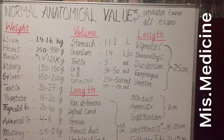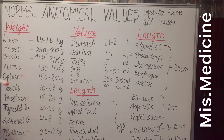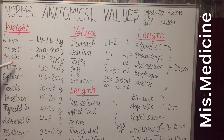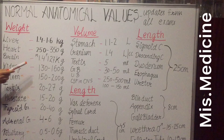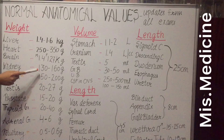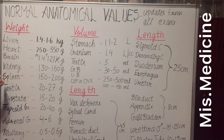Starting with weight: liver is 1.4 to 1.6 kilogram, heart is 250 to 350 gram, brain in males is 1.4 kilogram and in females 1.27 kilogram, kidney is 130 to 160 gram, spleen is 150 to 200 gram — spleen is important.